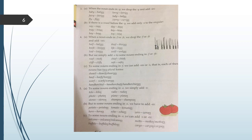When the noun ends in Y, we drop the Y and add IES like baby, babies, lorry, lorries, fairy, fairies, lady, ladies, fly, flies, curry, curries. If there is a vowel before the Y, we add only S to the singulars. Vowels are A, E, I, O, U. Ray, rays. Tray, trays. Boy, boys. Day, days. Key, keys. Toy, toys.